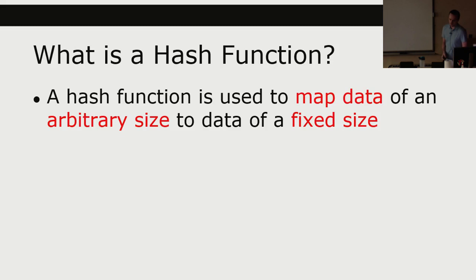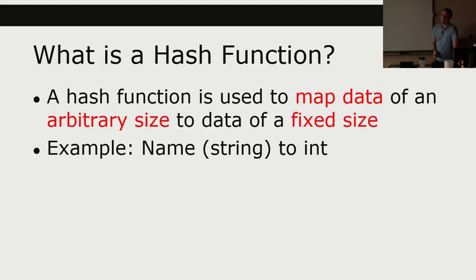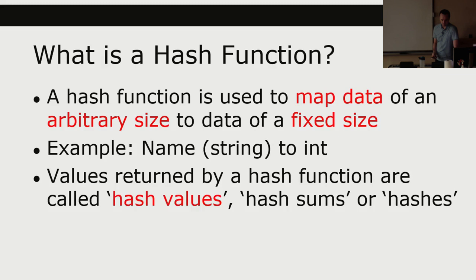First of all, what is a hash function? A hash function is used to map data of an arbitrary size typically to data of a fixed size. For example, if I want to take someone's name — and not everyone's name is the same length string — we can take a name of arbitrary length and turn that into an integer of a given size. Values returned by hash functions are called hash values, hash sums, or hashes. You take data, run it through some function, and typically get a value of a fixed size.